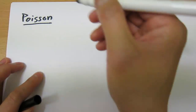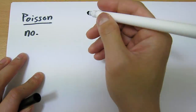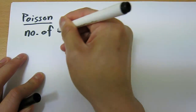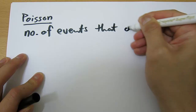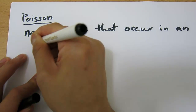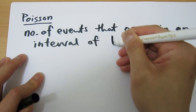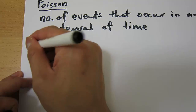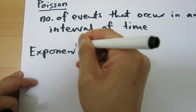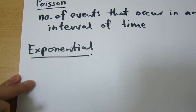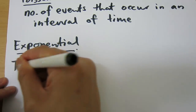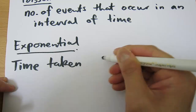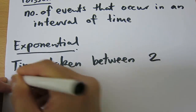The exponential distribution is actually closely related to the Poisson distribution. The Poisson is usually mandatory in most stats courses, while exponential is sometimes optional. The Poisson distribution allows us to answer questions about the number of events that occur in an interval of time. With the exponential distribution, it's like the flip side — we answer questions about the time taken between two events occurring.